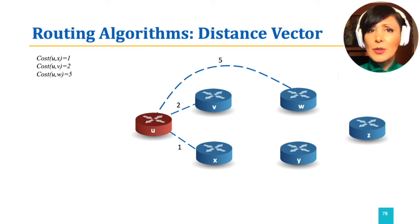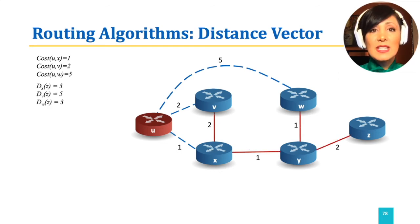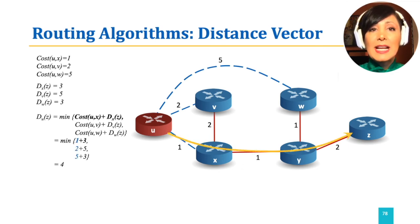Suppose we are at an iteration that these updates show dxz equals 3, dyz equals 5, and dwz equals 3. Using these pieces of information in the Bellman-Ford equation, duz will be the minimum of dxz plus cost of u and x, dvz plus cost of u and v, and dwz plus cost of u and w.